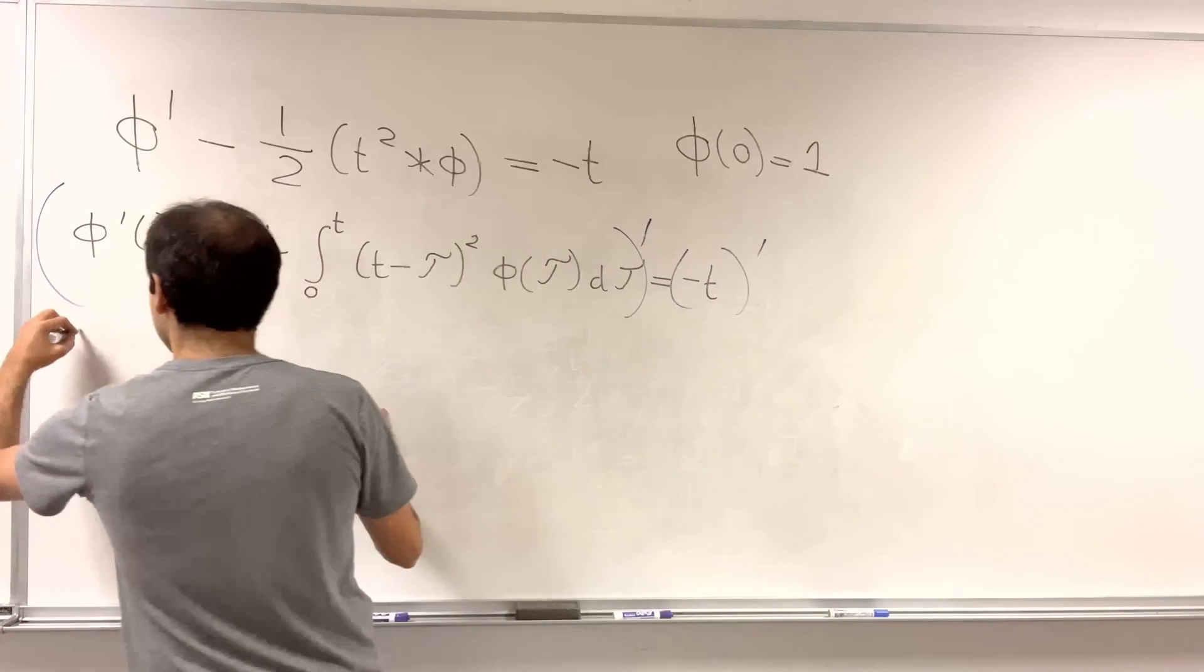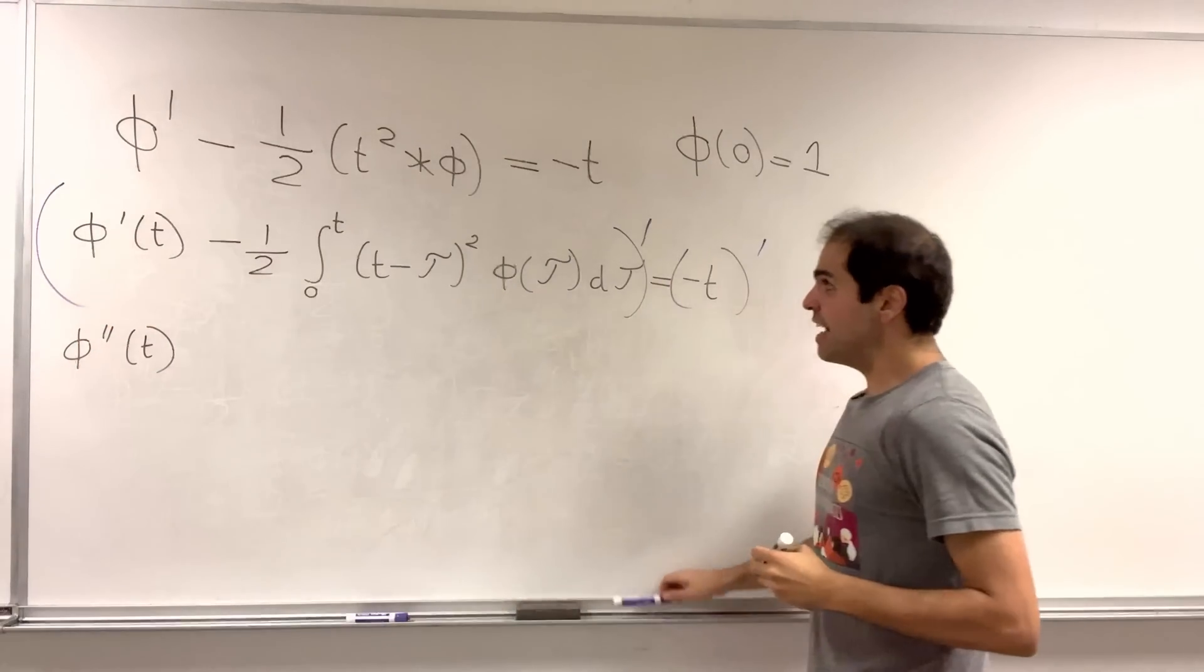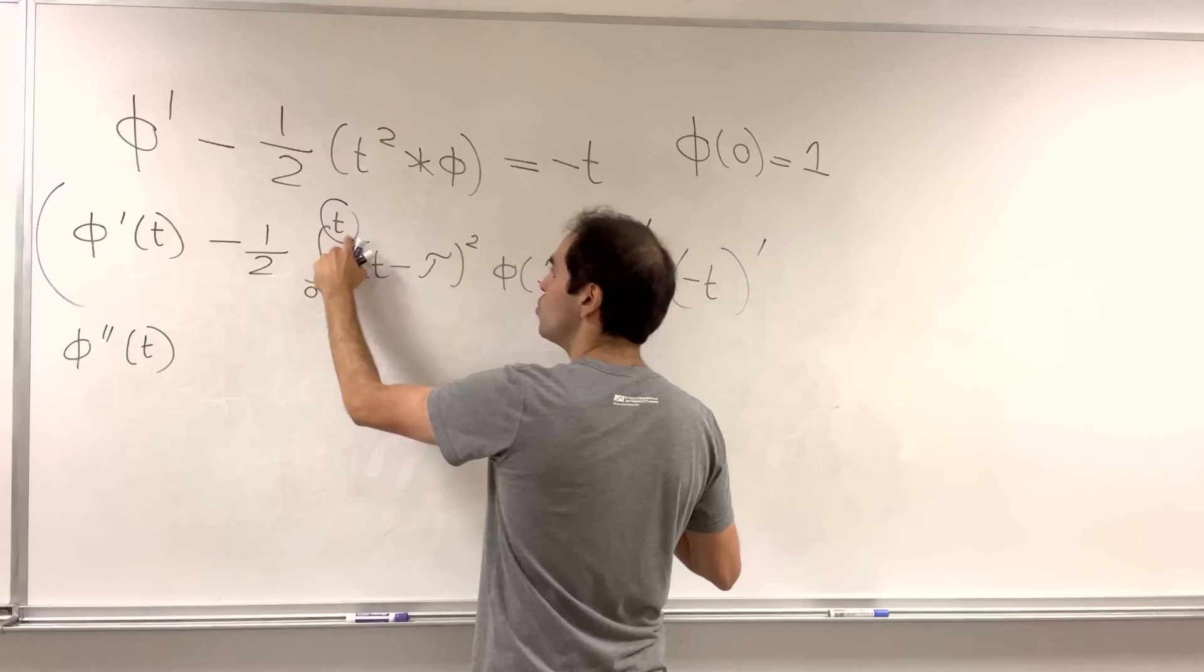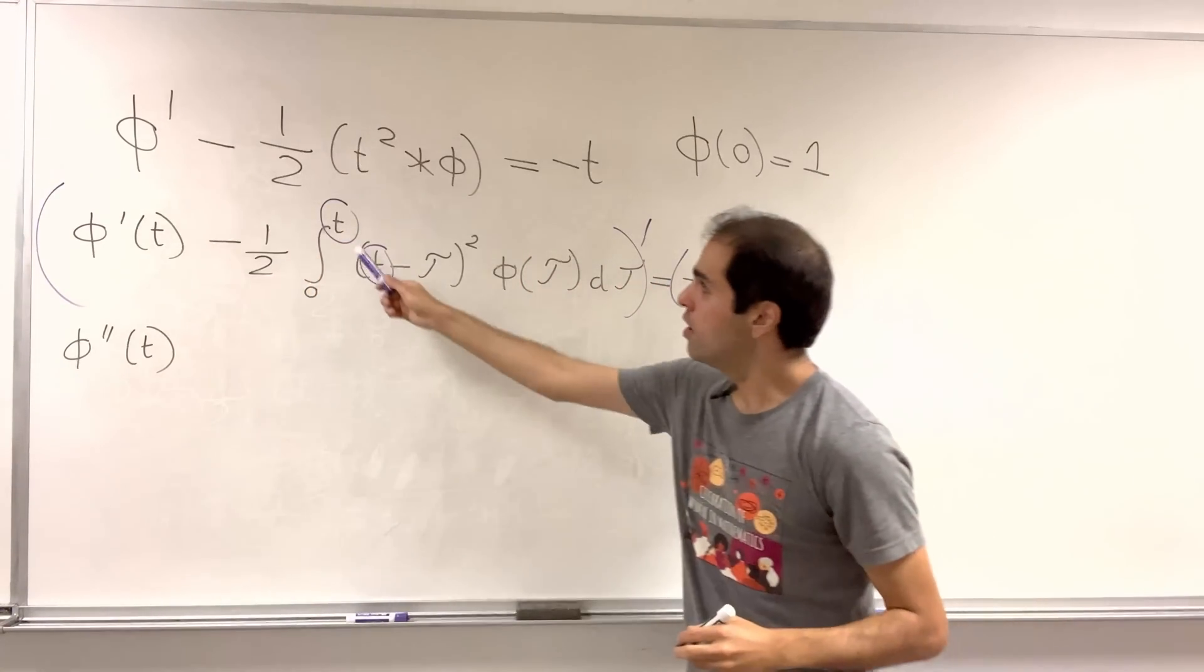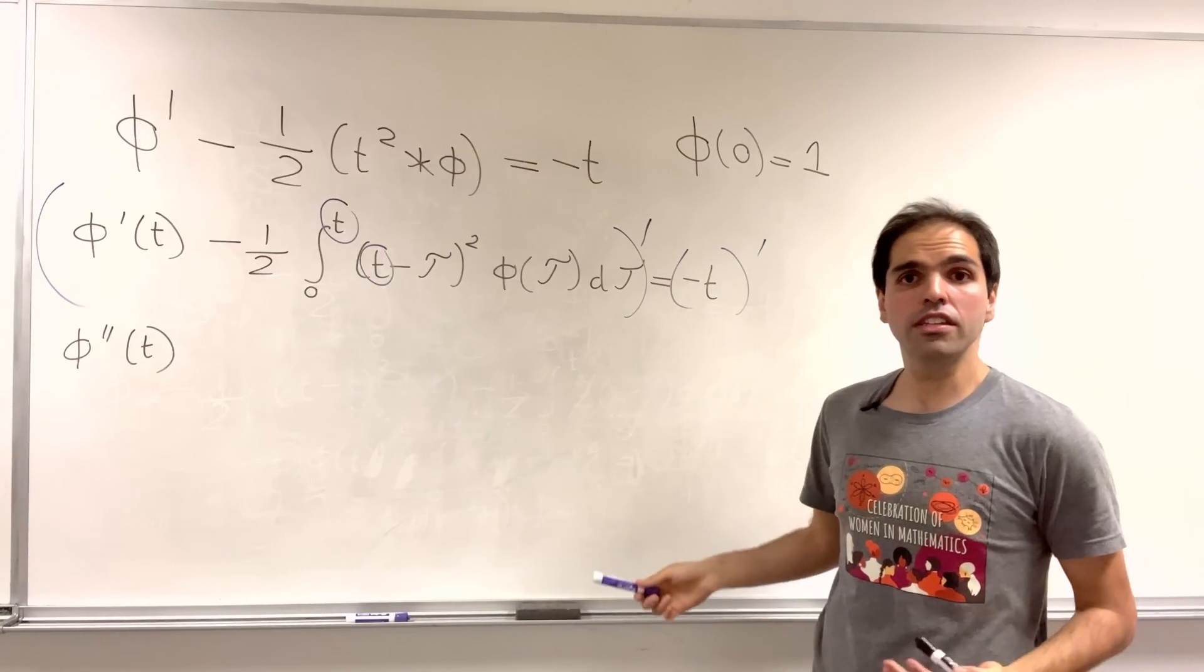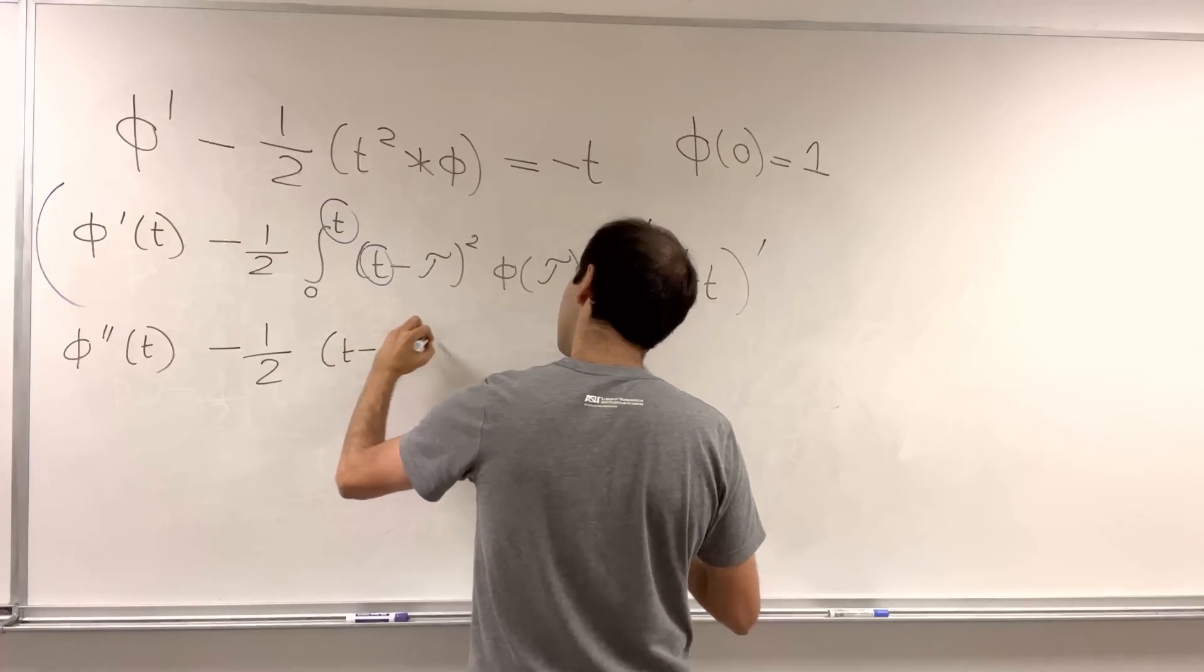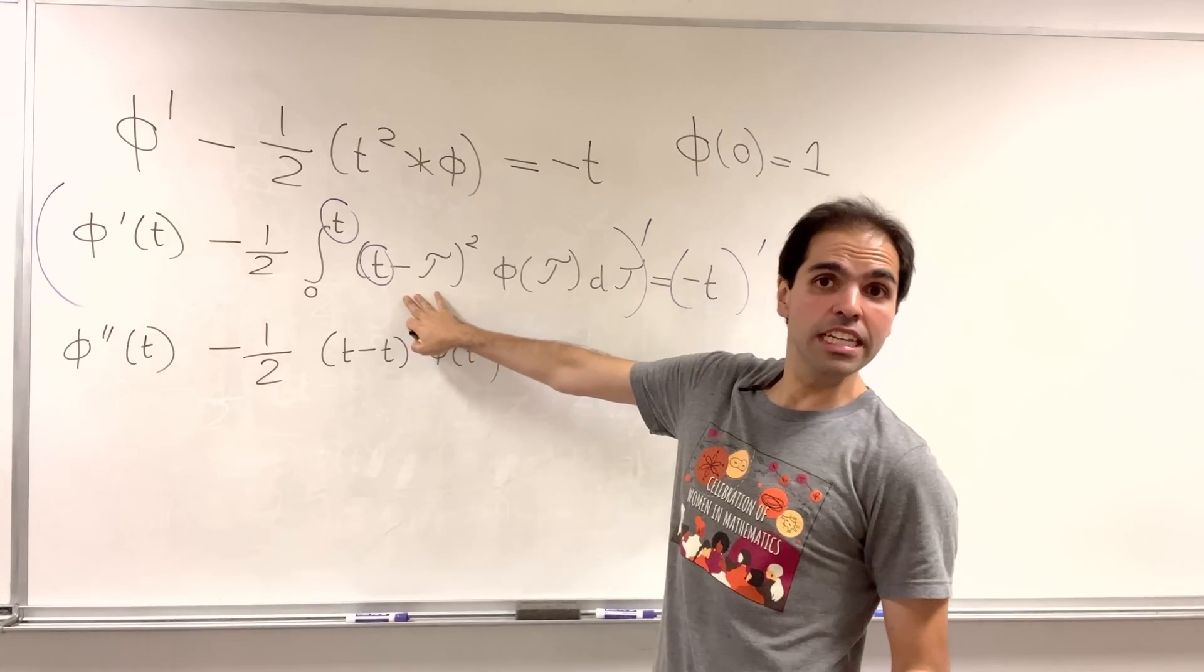Then, what we get is the following. So, phi double prime of t. And now, to differentiate this integral, you've got to use Leibniz rule, but it's a little bit more complicated, because we have a t here, and we have a t here. So, to differentiate the outside t, we have derivative of an integral. So, by the FTC, this is one-half t minus t squared, phi of t.